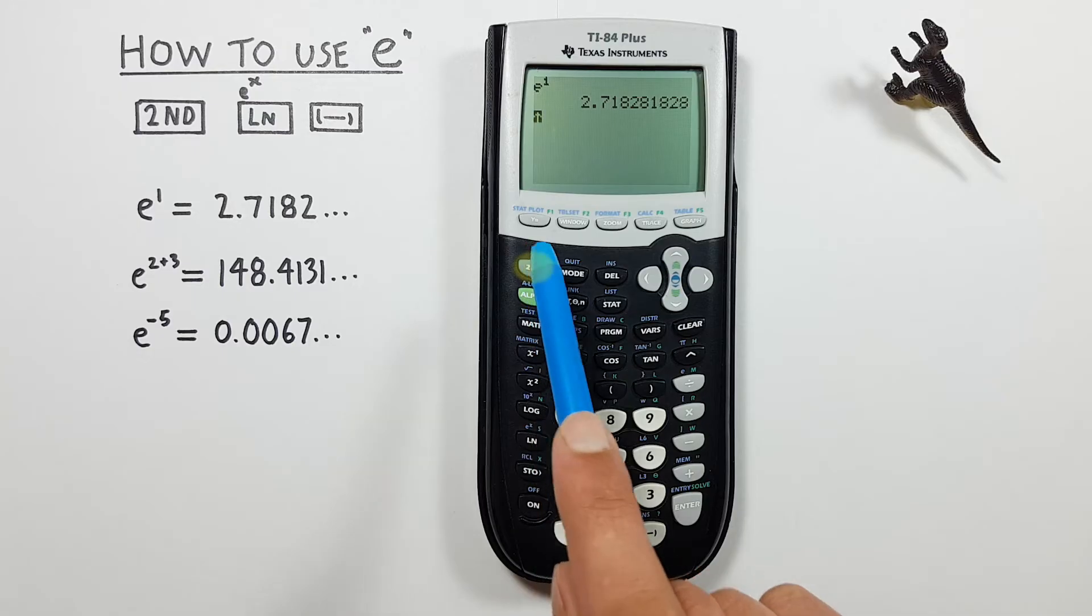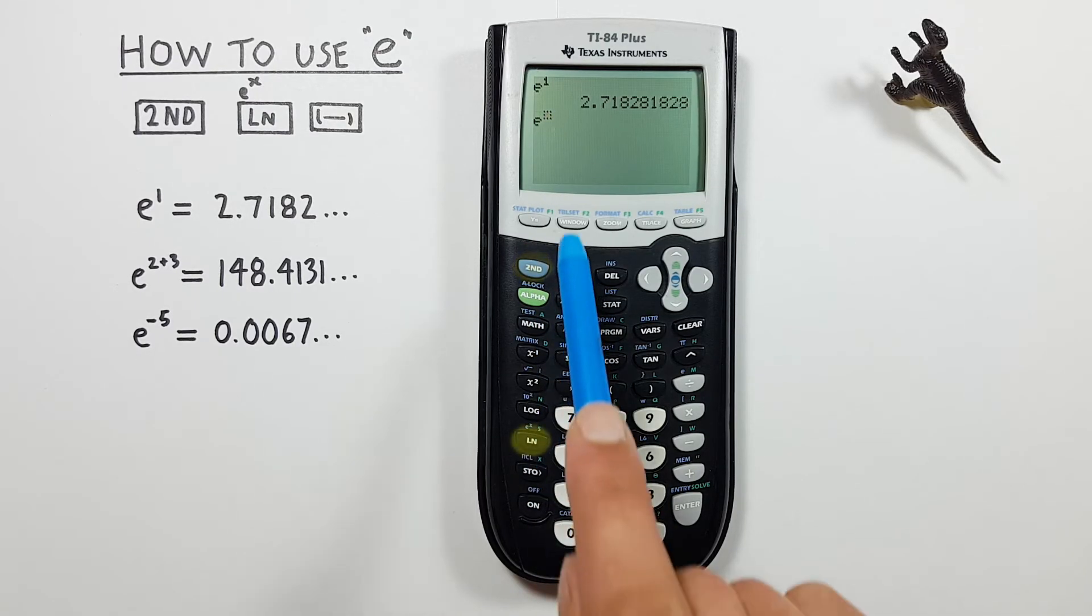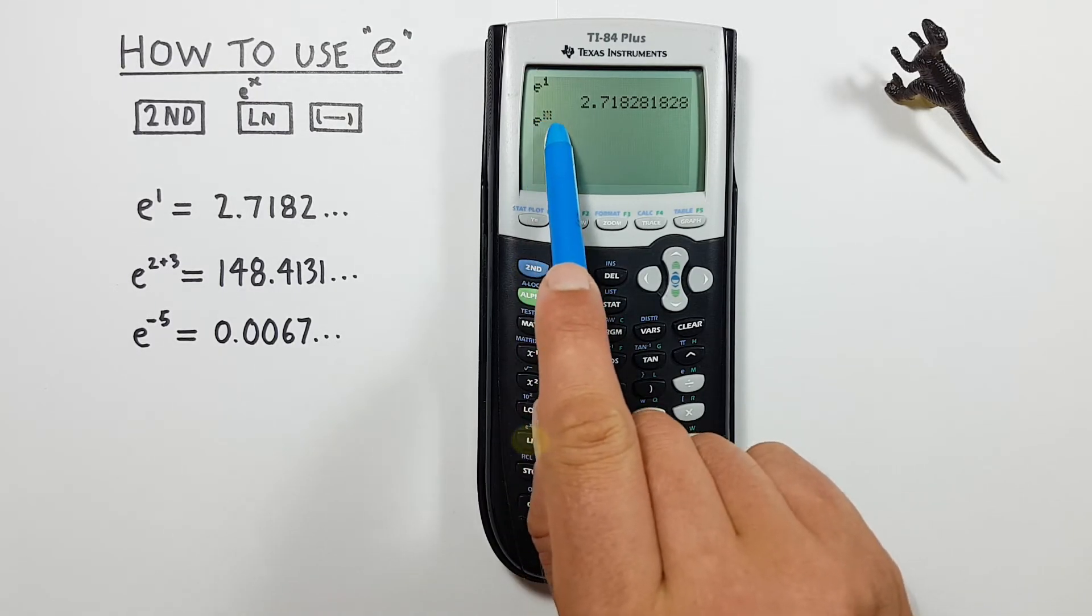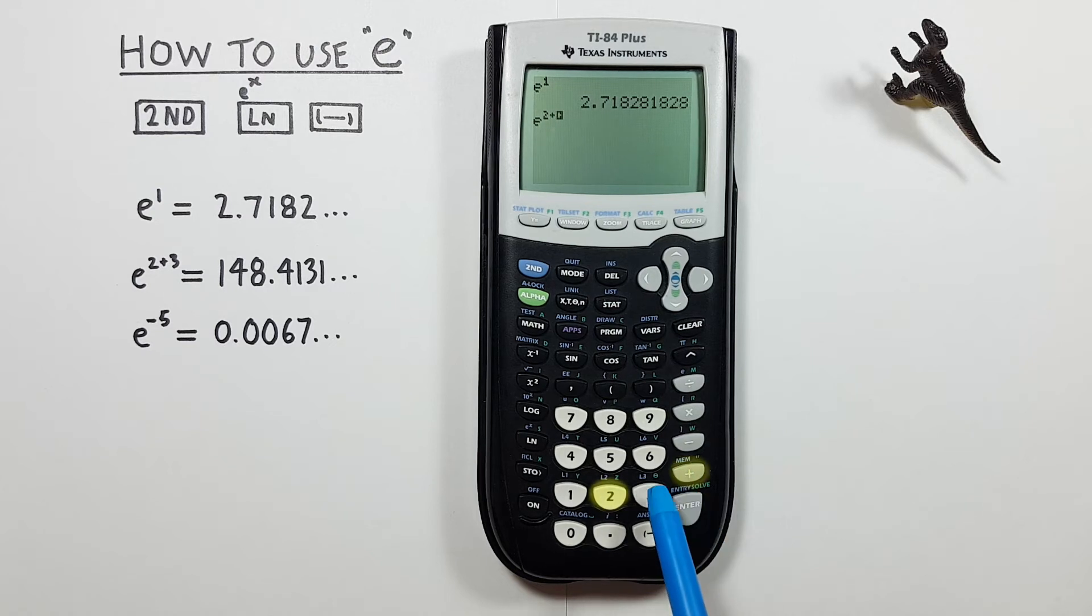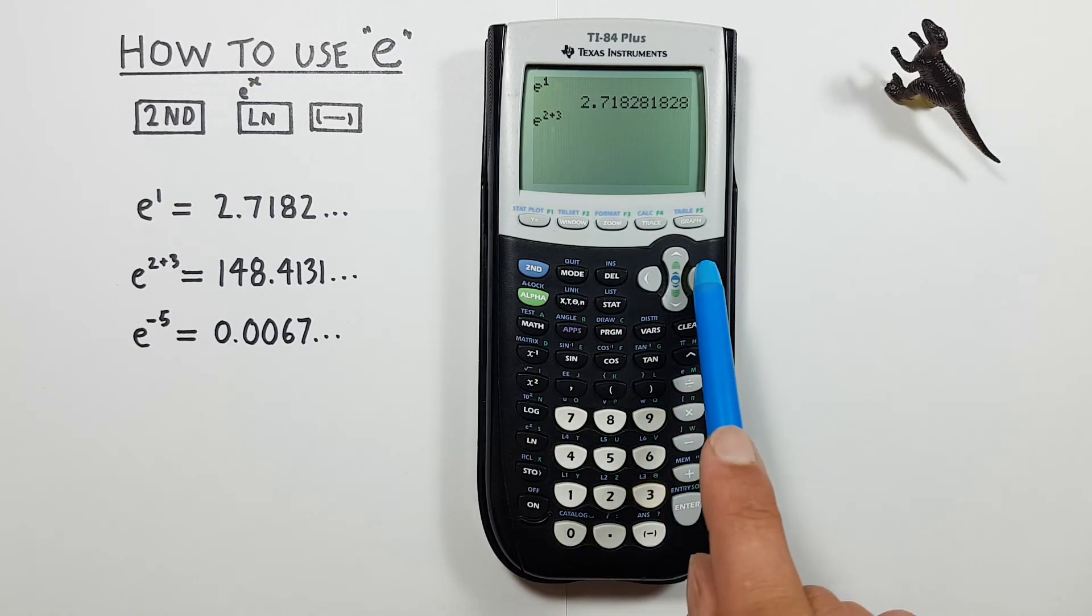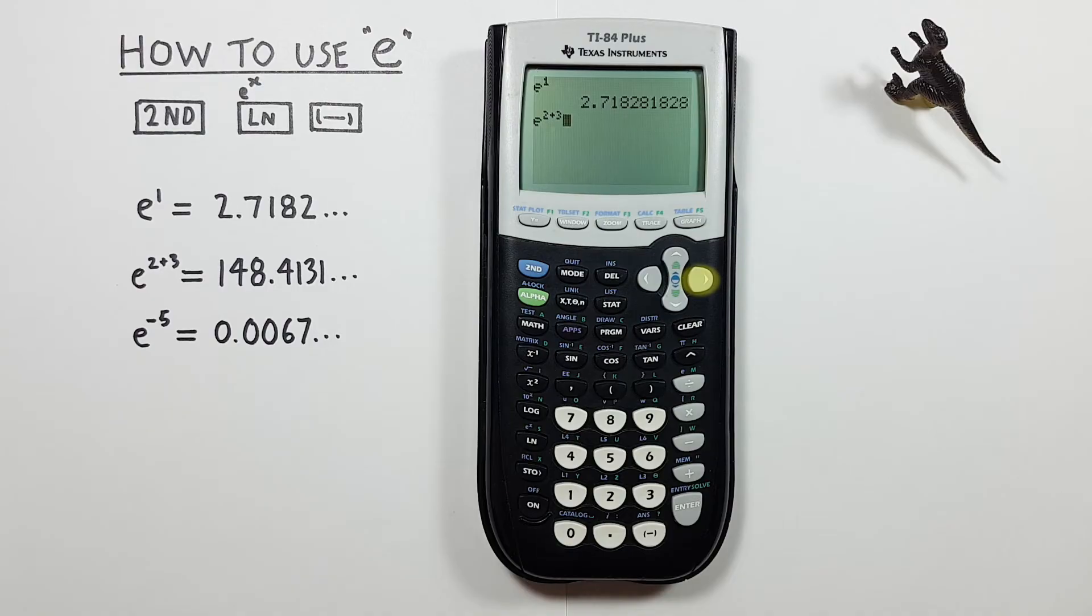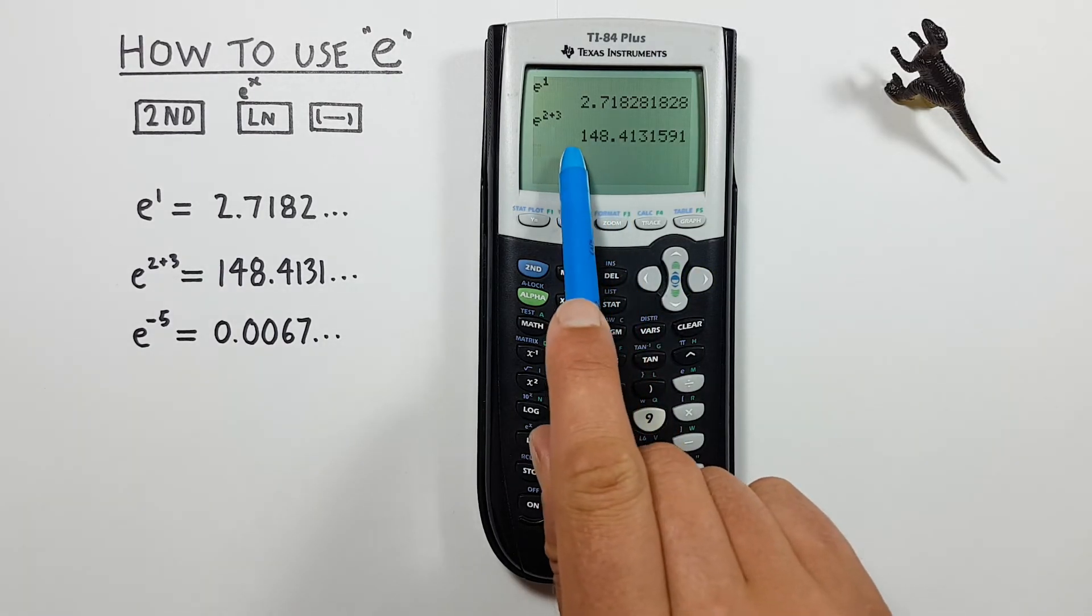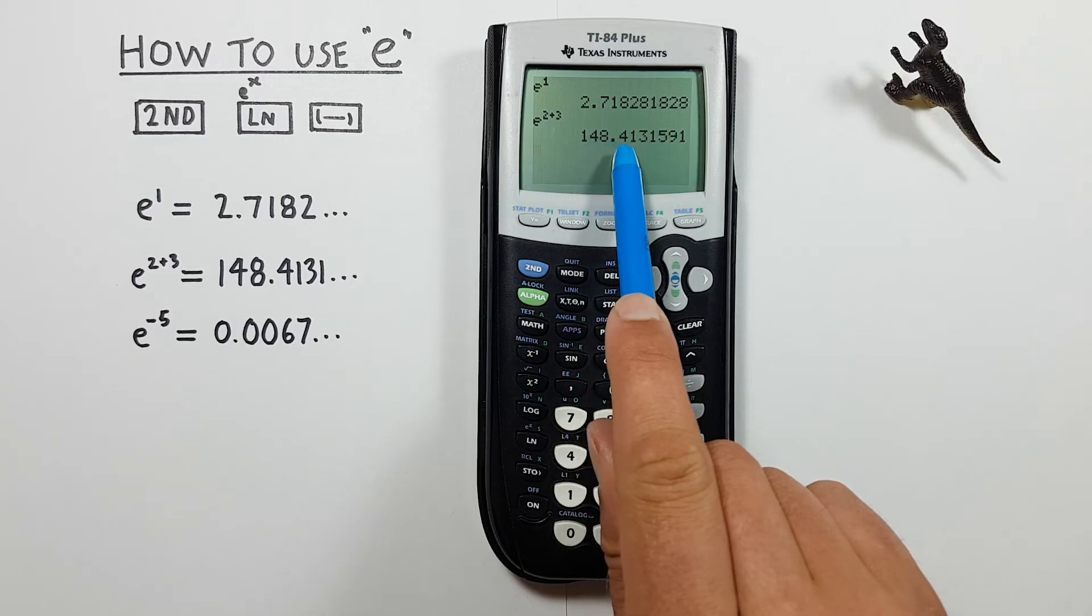And then in the exponent box we go 2 plus 3, and then we can bring our cursor down and press enter and see we get a result of 148.4131 etc.